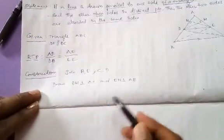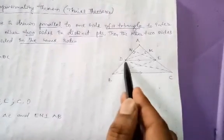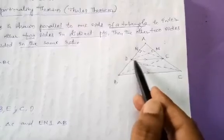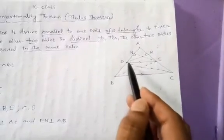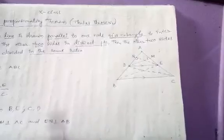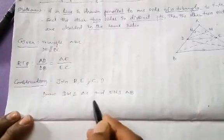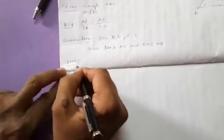To complete this proof we will do some extra work known as construction. Under construction: join BE and CD. Similarly, draw perpendiculars from D and E — DM perpendicular to AC, and EN perpendicular to AB. Both perpendiculars are drawn as part of the construction.